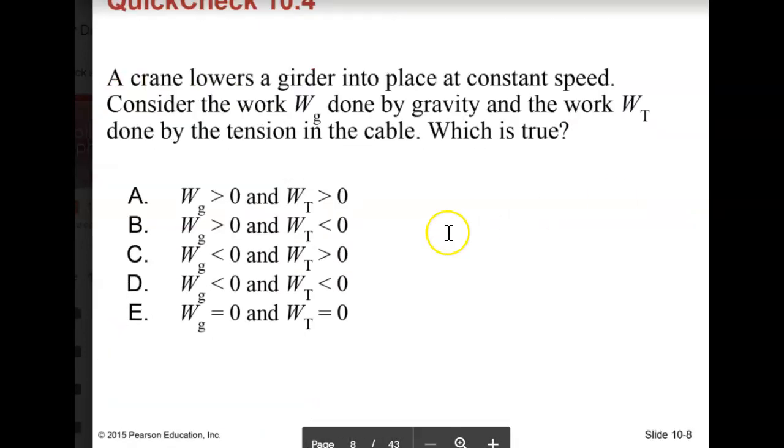This is a bit tougher. A crane lowers a girder or steel beam into place at constant speed. Consider the work done by gravity and the work done by tension in the cable, which is true? Gravity, the work done by gravity is positive. The work done by the cable is positive. Work done by, but I'll let you read the choices.